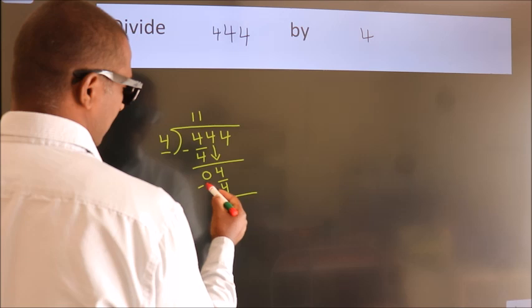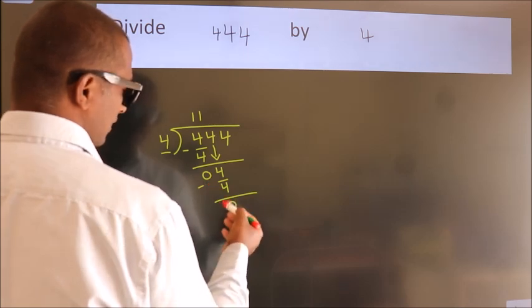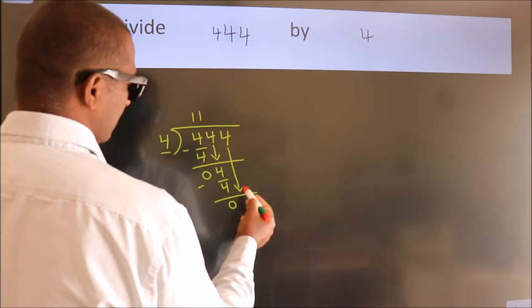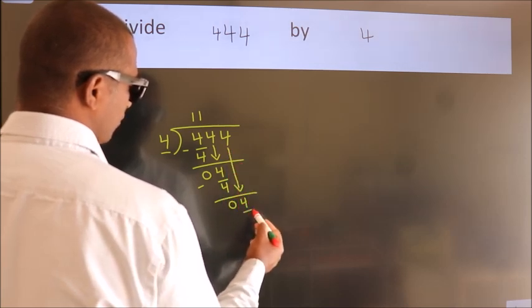Now, we subtract. We get 0. After this, bring down the beside number. So 4 down. So 4.